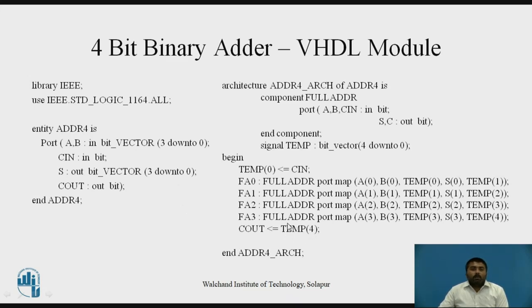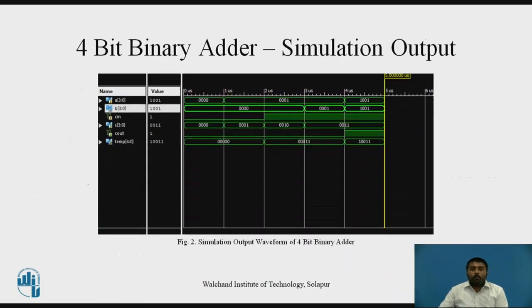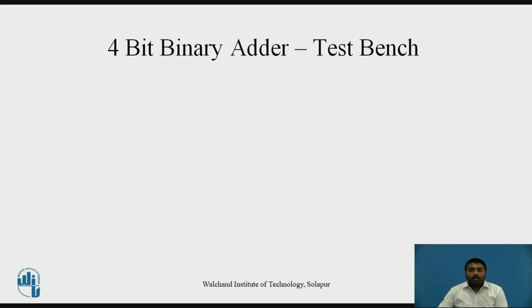If you have performed the simulation for this code, you will get an output waveform. You can pause the video and verify the different conditions — if inputs A and B are both 0, what will be the output, and what happens when you vary the input signals. Now let us go for the test bench. The test bench is used to verify whether the designed VHDL code for that particular device or circuit is functioning properly or not. So for that purpose, there is a syntax — let us go through the syntax first.